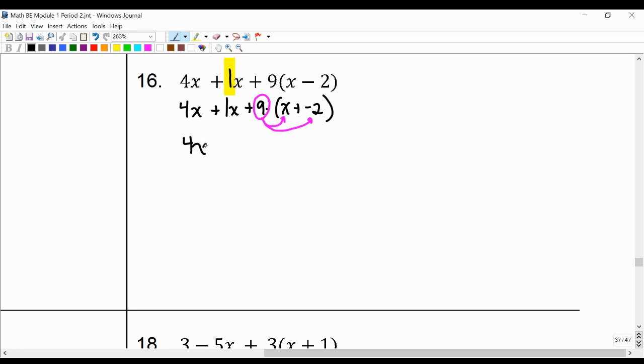We have 4x plus 1x plus 9 times x plus 9 times negative 2.